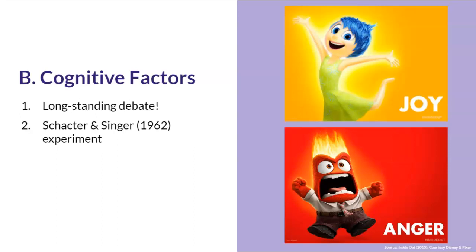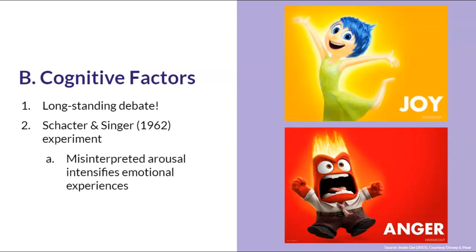Schachter and Singer theorized that participants paired their physical symptoms of being jittery with a cognitive label of either happy or angry — the thoughts — which then resulted in the stated emotion. This experiment provided evidence that misinterpreted physiological arousal intensifies emotional experiences. In other words, if we mistake the physical symptoms of jitteriness and heart racing as something is wrong, then we will feel that mistaken emotion of fear or anxiety even more intensely. For students with anxiety, I encourage you to slow down before automatically interpreting any physical symptoms of heart racing as being nervous, when in fact you may be excited about the situation at hand.